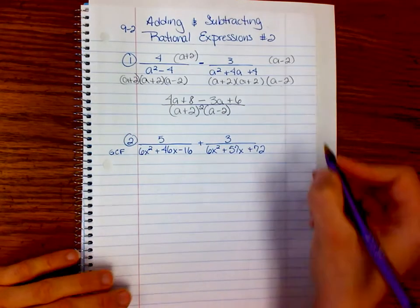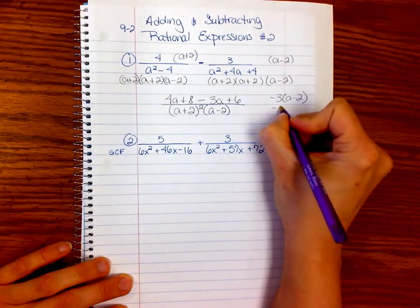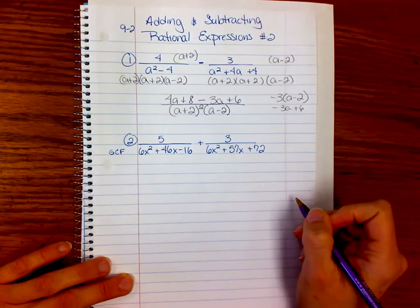So watch your signs there. You know, it might be better for you to, on the side, do it like this: negative 3a plus 6, and then plop it back in.